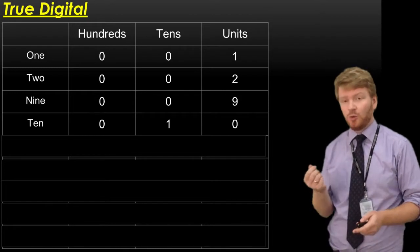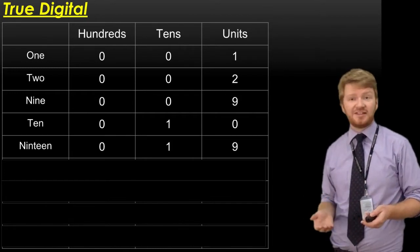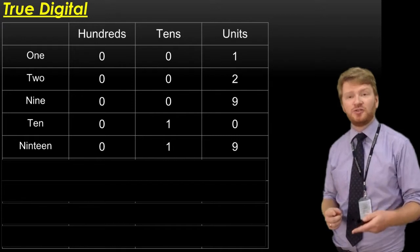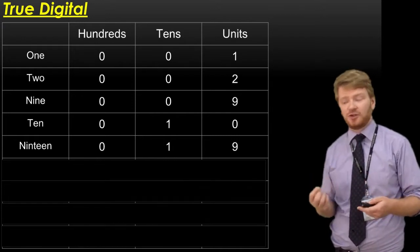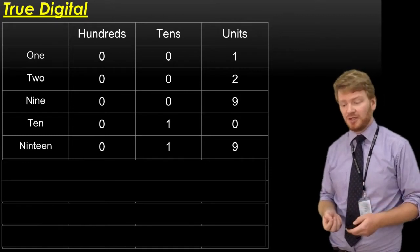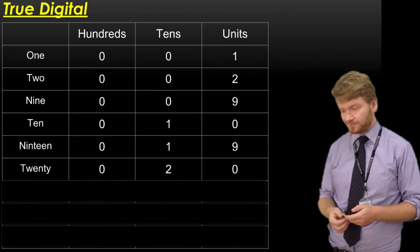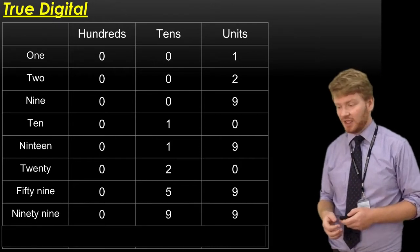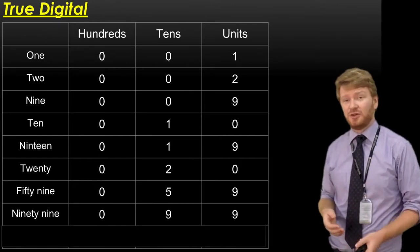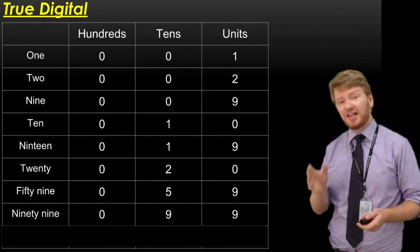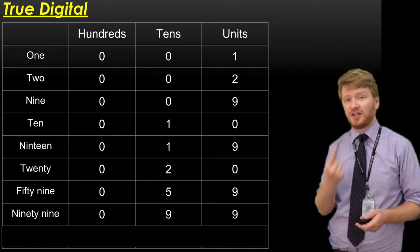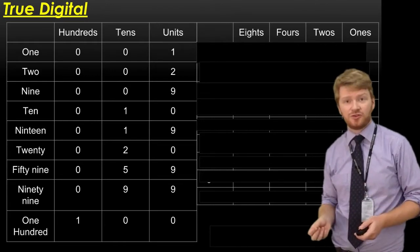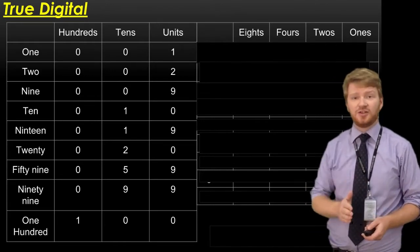So instead of recording 10 in the units column, we take it into the next column over. We'll have 1 ten and no units. The number 19 means 1 ten and 9 units. I can't store anything else in the units column, so I have to increase the tens unit instead. It becomes 20. If I want to record 59, I have 50 in my tens and 1 nine. But if I want to get to 100, I've got nothing left in the tens. My tens column only goes up to 9, so I've got to put something in the next column - the hundreds.